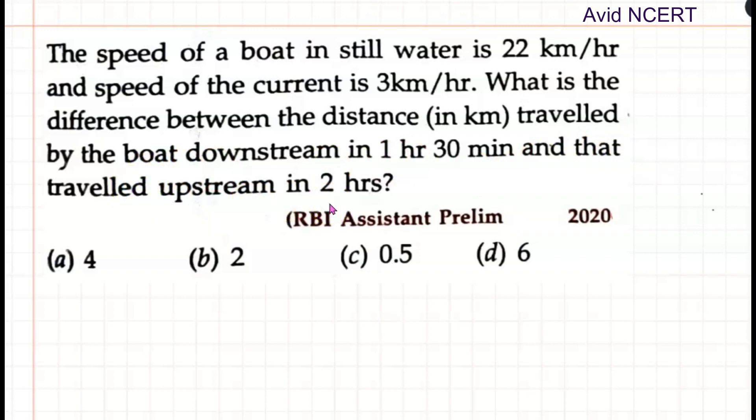So the data we have here is speed of the boat in still water. Boat speed U equals 22 km per hour and speed of the current, which is V, equals 3 km per hour.